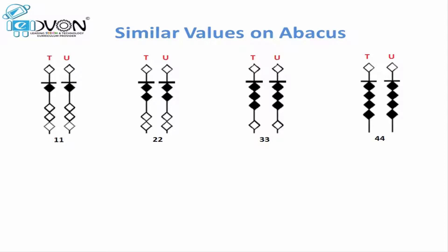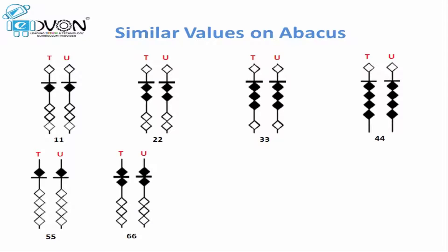How we will place 55? To place 55 we will move the upper beat down to touch the calculation bar on tens rod and units rod as well. To place 66, upper beat down and one lower beat up to touch the calculation bar on both the rods.